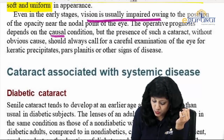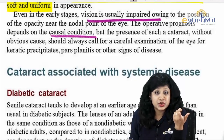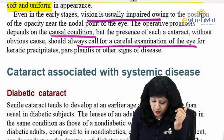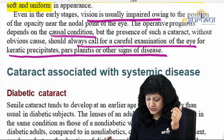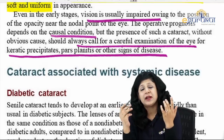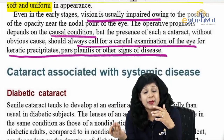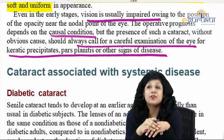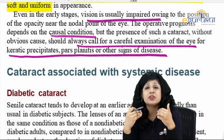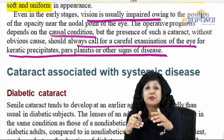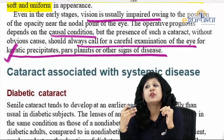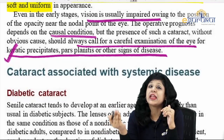The operative prognosis depends upon the causative condition, but the presence of such a cataract should always call for a careful examination for KPs, pars planitis, and other signs of disease. Whenever you get a cataract with polychromatic luster, breadcrumb appearance, posterior cortical or posterior subcapsular cataract, always think about complicated cataract. Always look for keratic precipitates first, because the most common cause is chronic anterior uveitis.